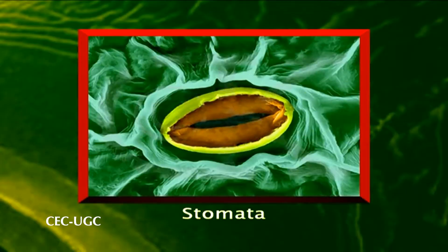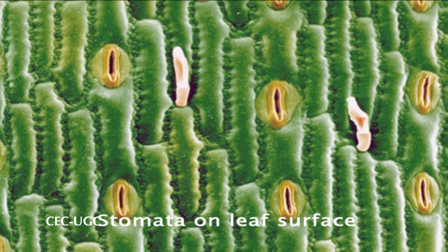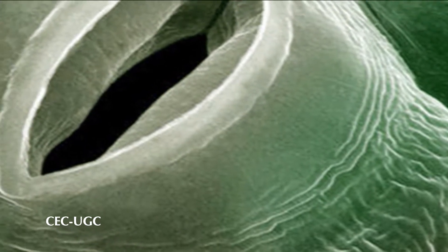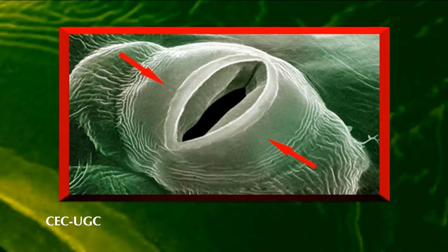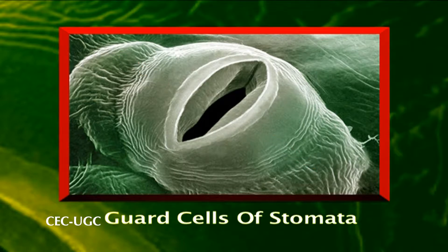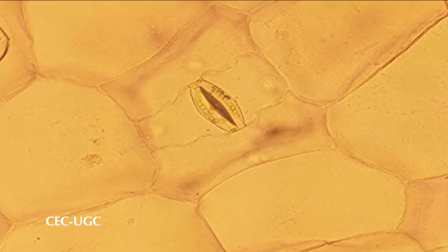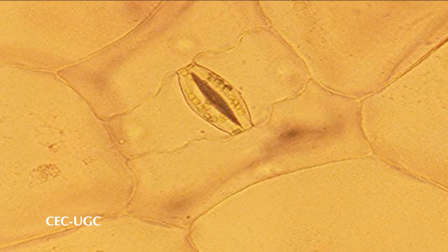A stoma is a microscopic pore on the surface of land plants. It is surrounded by a pair of specialized epidermal cells called guard cells, which act as a turgor-driven valve that open and close the pores in response to given environmental conditions. The guard cells are connected with the adjacent epidermal cells through plasmodesmata.